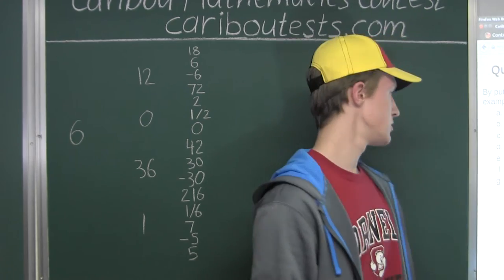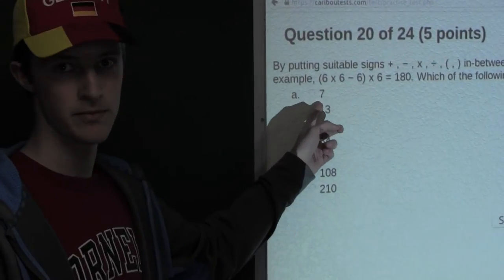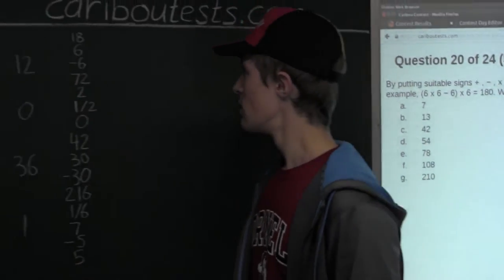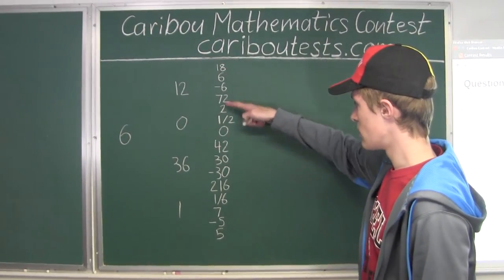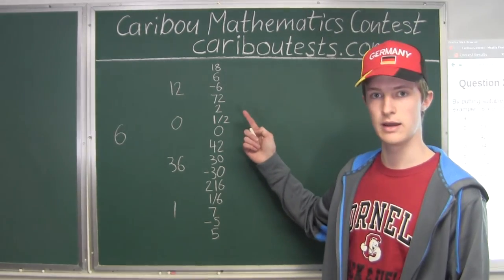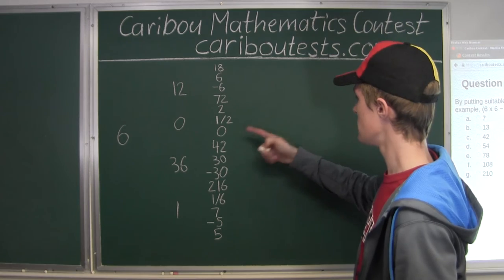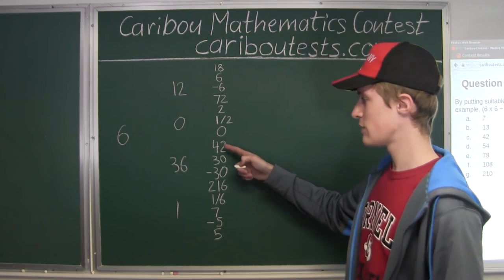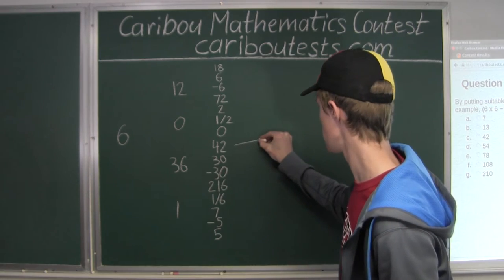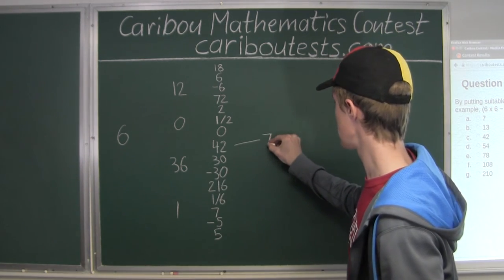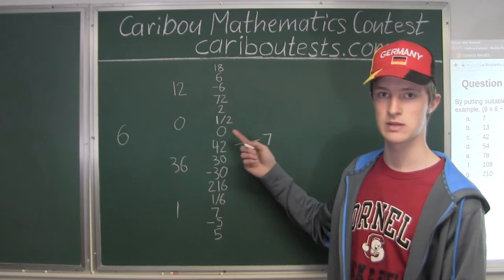Now we'll do this for option A, the number 7. Combining one of the three-six numbers with a 6: we have 42, and if we divide it by 6 we get 7. So we can generate 7 this way.